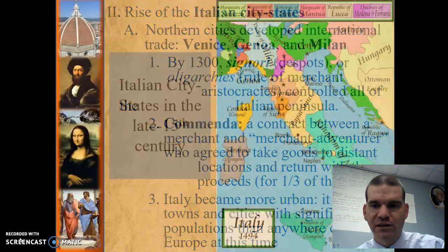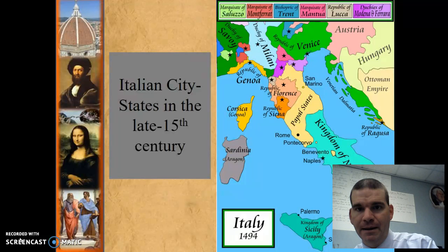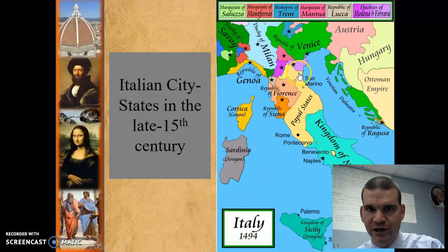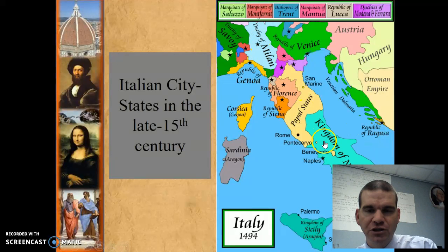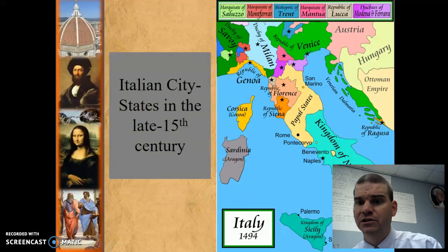Take a look at this map — it's very important. Keep in mind this map whether we're talking about Venice and why they're able to dominate trade, Genoa, the Papal States, Milan, and the Kingdom of Naples. Just be aware of where these places are. It's always good, as you read about an area, to look at a map so you can get a visual for that area.